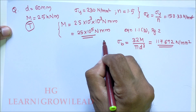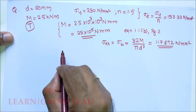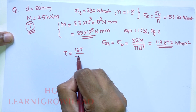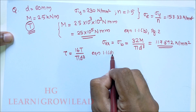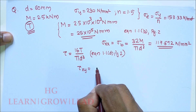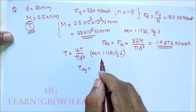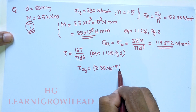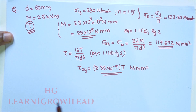The bending stress is obtained and taken as sigma_xx. Torque T is the unknown value. We know that tau equals 16T divided by πd³, according to equation 1.1d, page number 2. So tau_xy equals 16T divided by π × 60³, giving tau = 2.35 × 10⁻⁵ × T N/mm², where T is the unknown value.